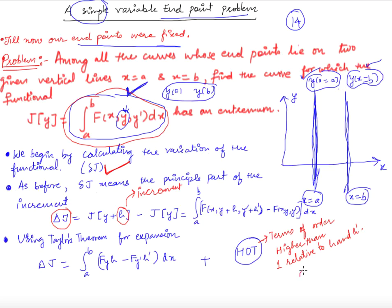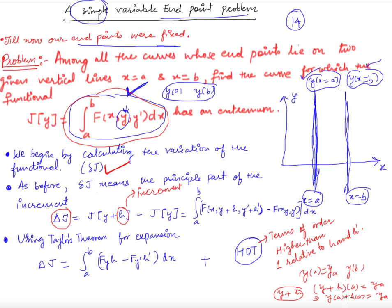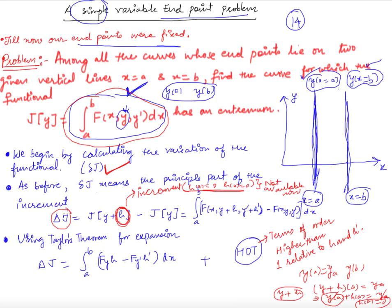In the previous case, y(a) was fixed and y(b) was fixed, so when we used y+h as an admissible input function, we needed y(a)+h(a)=y(a), giving h(a)=0. Similarly h(b)=0. But these conditions are not available now, since the boundary values are free. You must keep that in mind.